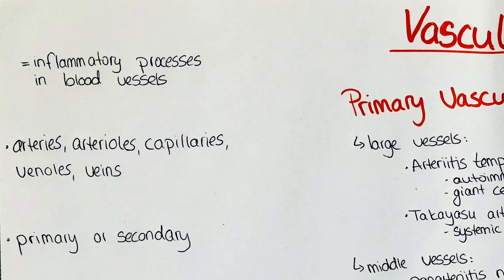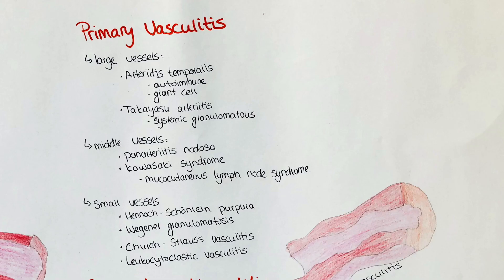Vasculitis can be of primary origin — then it is usually idiopathic, but those diseases are thought to be linked to rheumatic diseases — or it can be due to an ongoing disease, such as a hepatitis B infection or autoimmune diseases. The classification of vasculitis is done by the size of the blood vessels that are affected.